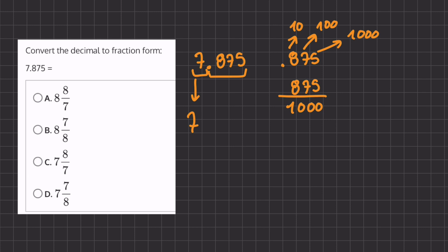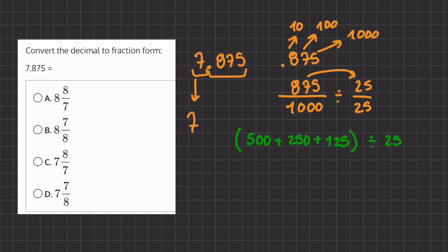So now this is our fraction, but we do have to simplify it, and we can simplify it by dividing the numerator and denominator by 25. It might be a little tough to divide 875 by 25 right away, so let's break up this big number. We can split 875 into 500 plus 250 plus 125, and divide that by 25. We'll also keep our denominator of 1,000 divided by 25.